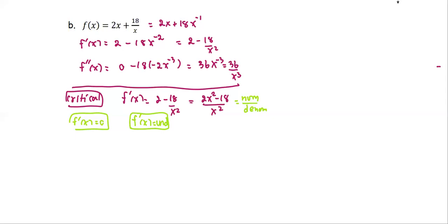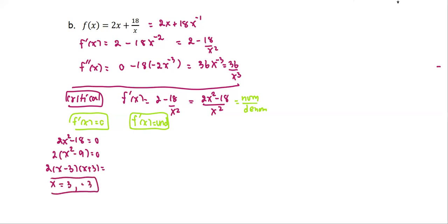So the numerator equals 0: 2x squared minus 18 equals 0, or 2 times x squared minus 9 equals 0. Factoring further gives x minus 3 times x plus 3, so we get two critical numbers: x equals 3 and x equals negative 3. For f prime undefined, the denominator equals 0, meaning x squared equals 0, which gives x equals 0.